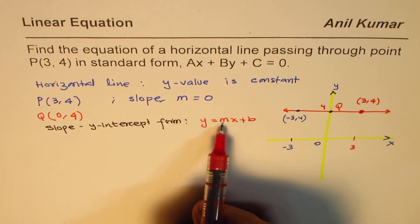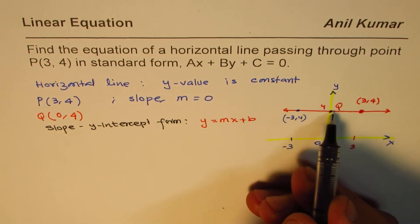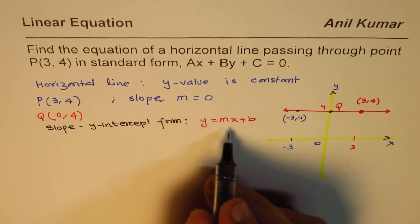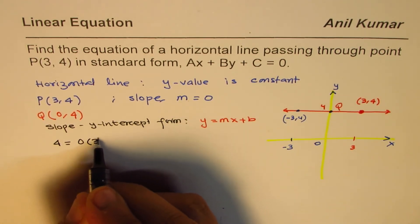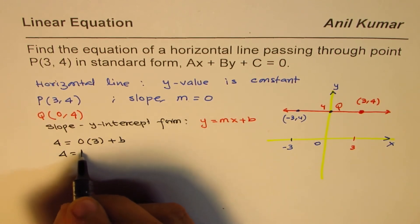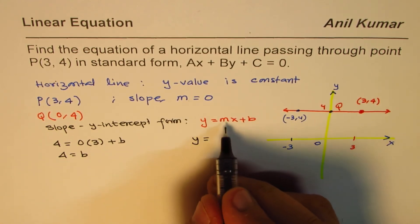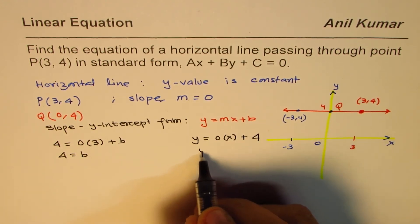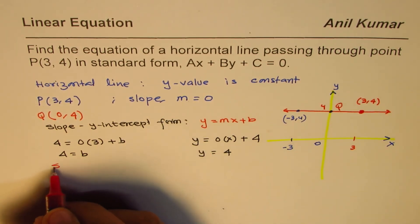We have y equals mx plus b. We know the slope is zero and a point is (3,4). To find the y-intercept, we substitute: four equals zero times three plus b, so four equals b. The value of b is four. So y equals zero times x plus four, which gives us y equals four. This equation is in slope-intercept form; now we need to write it in standard form.